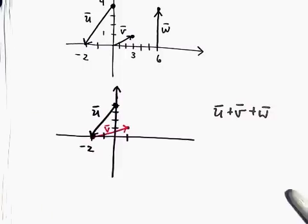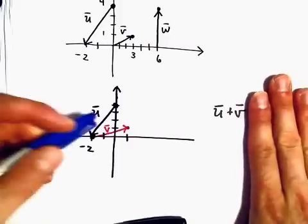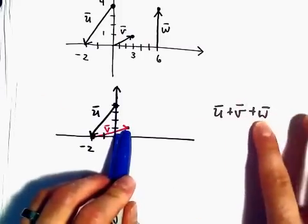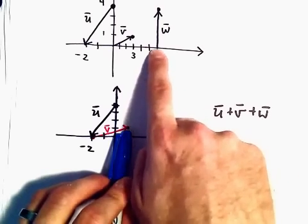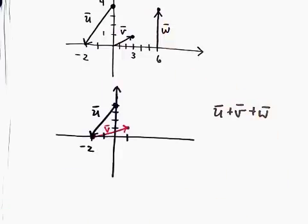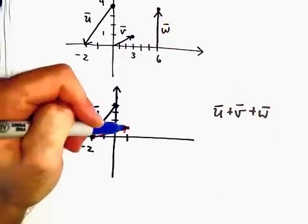And now what I'm going to do is I'm just going to add on vector w. So wherever v stops, w is going to start. So again, all vector w does is it basically just goes up 4 units vertically. So since we're sitting at the y-coordinate of 1,